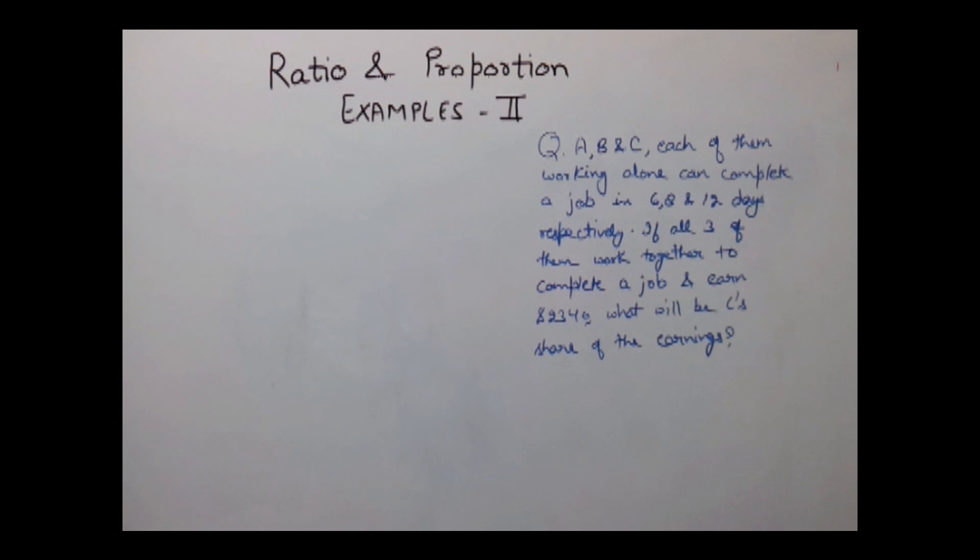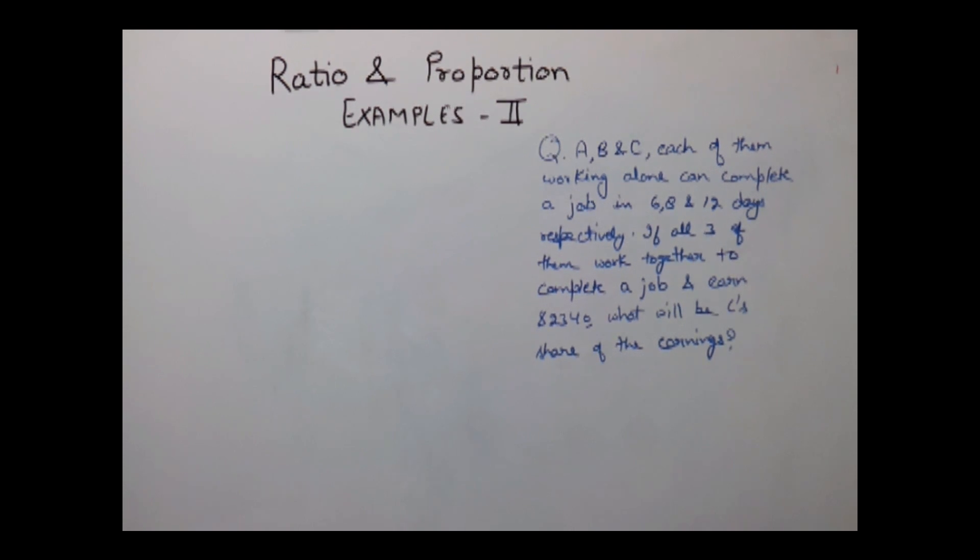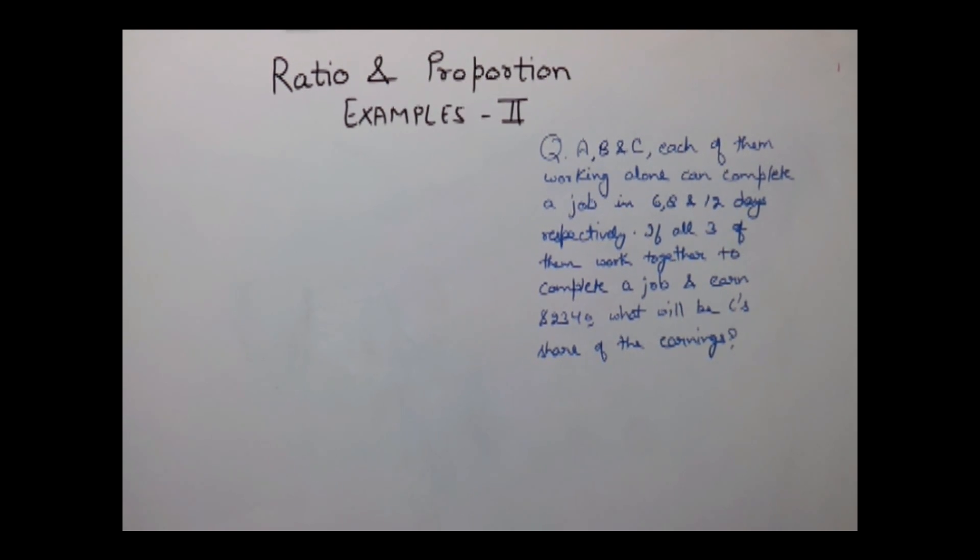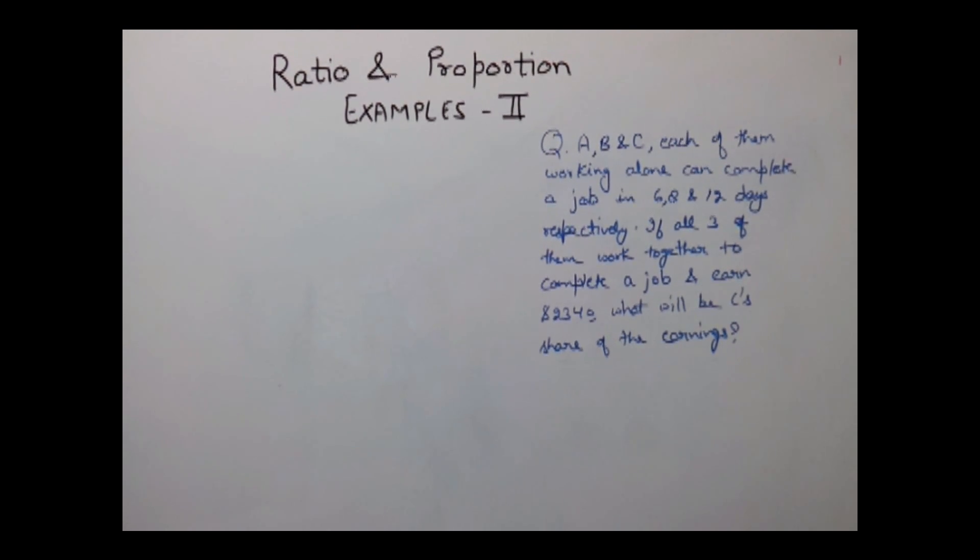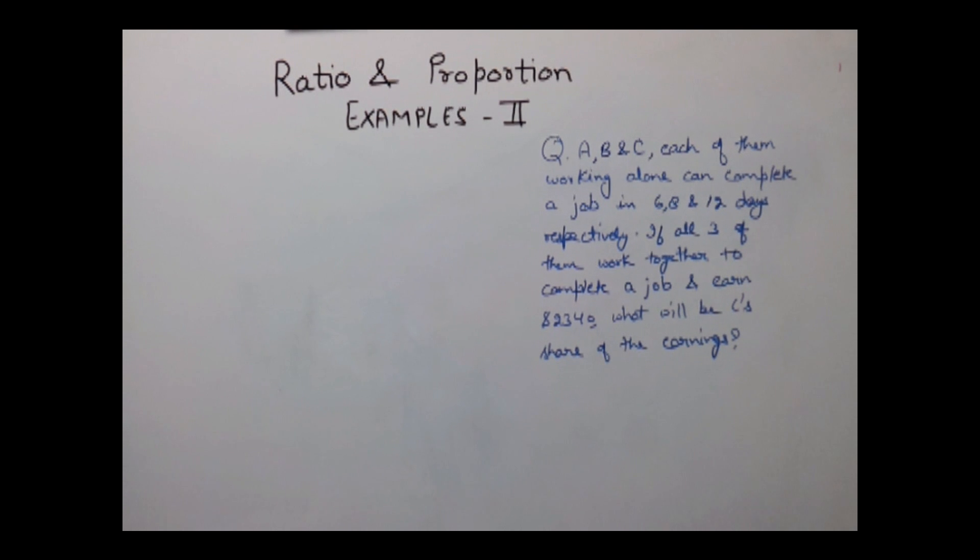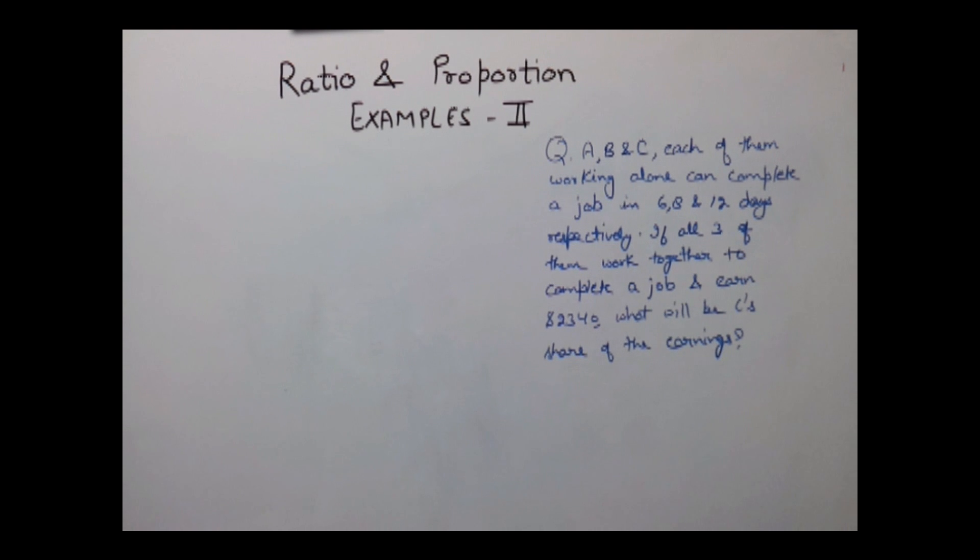Each of them working alone can complete a job in 6, 8 and 12 days respectively. If all 3 of them work together to complete a job and earn $2340, what will be C's share of the earning?